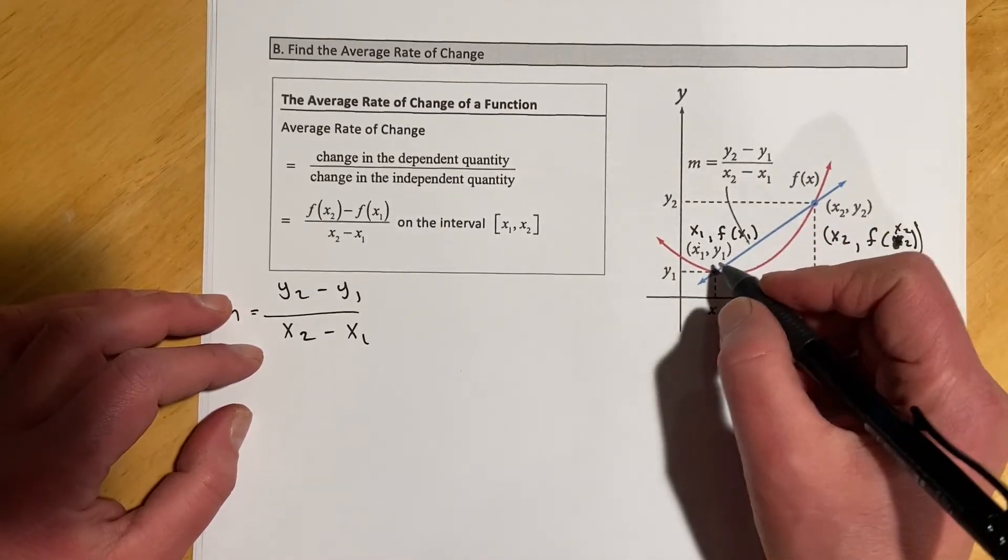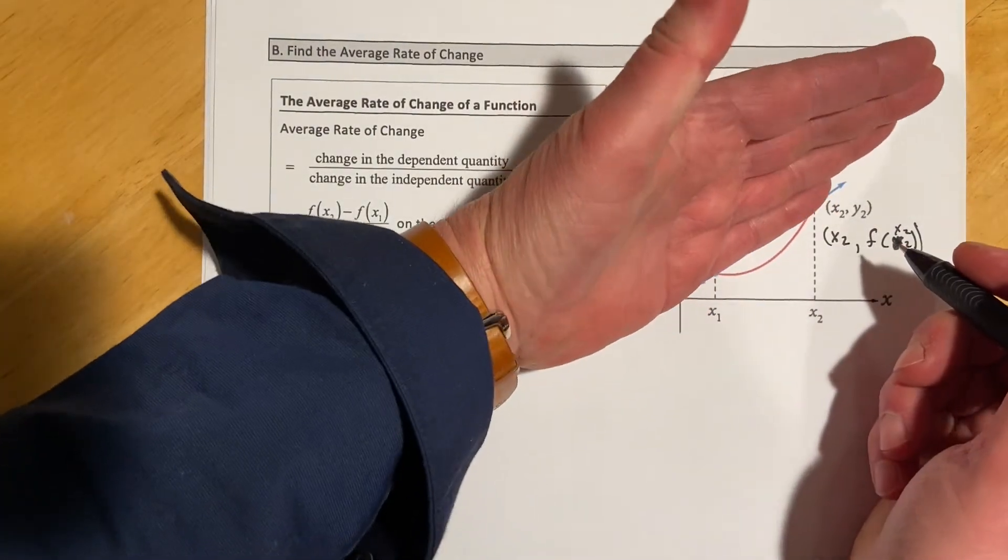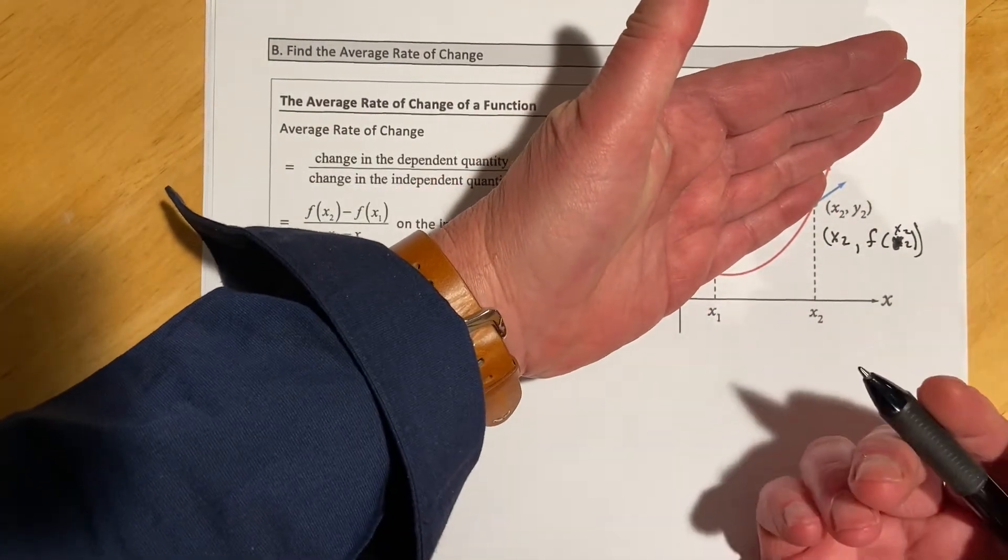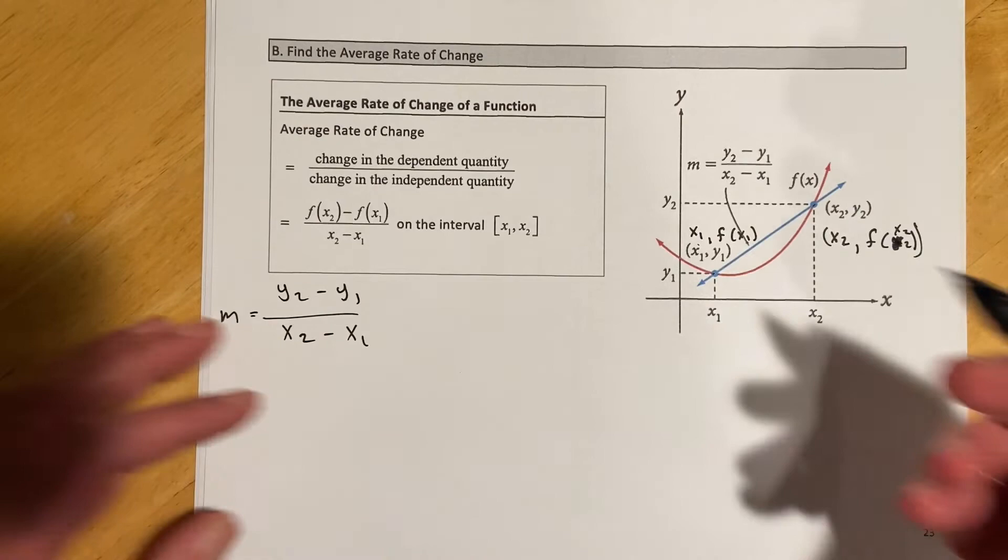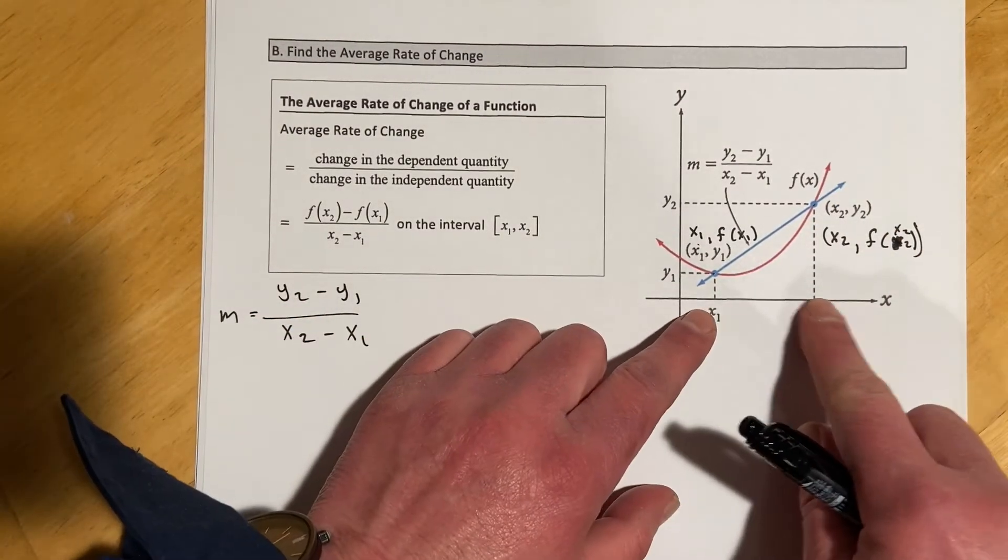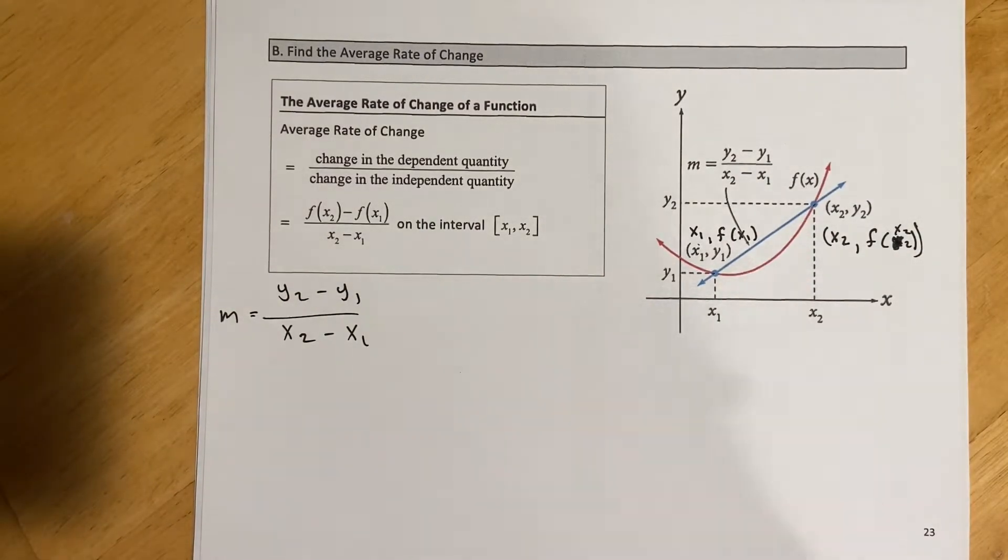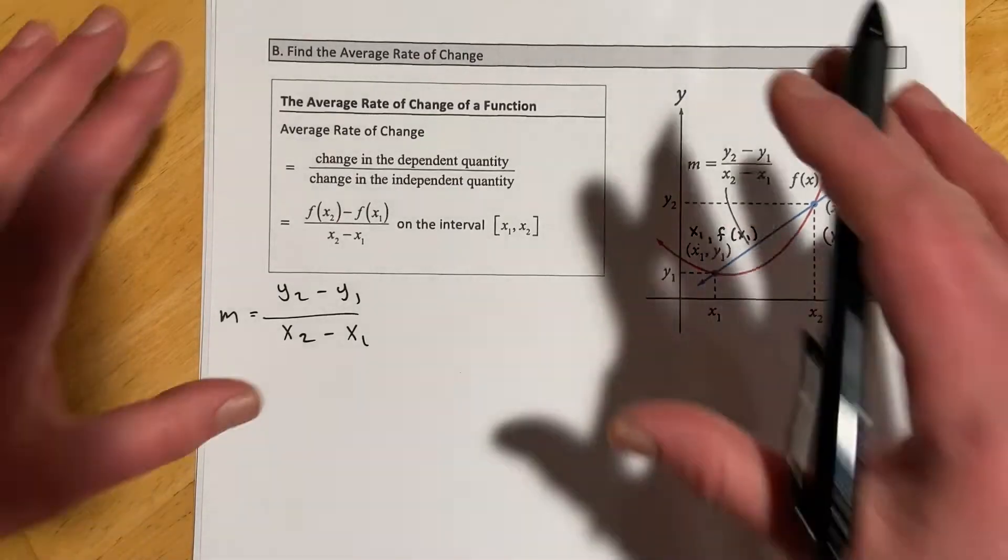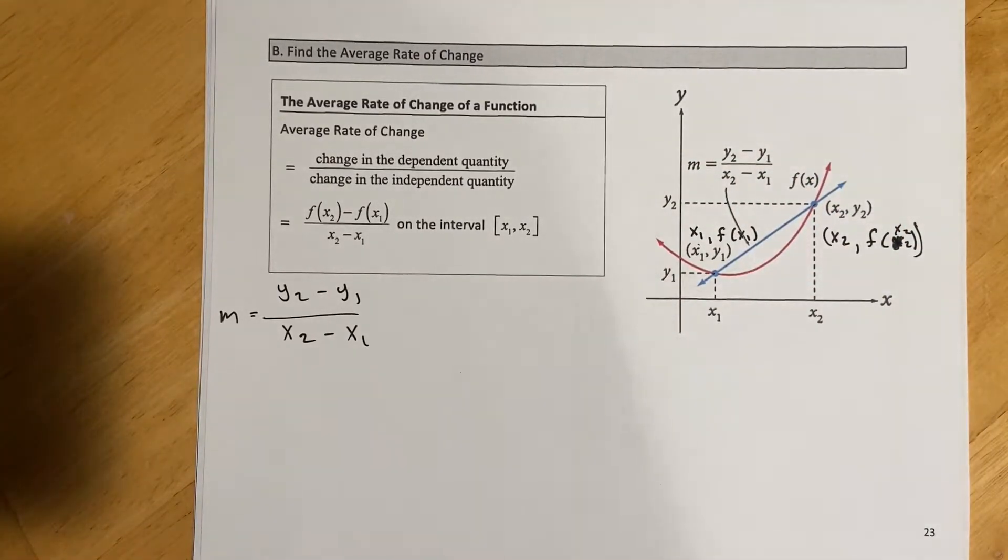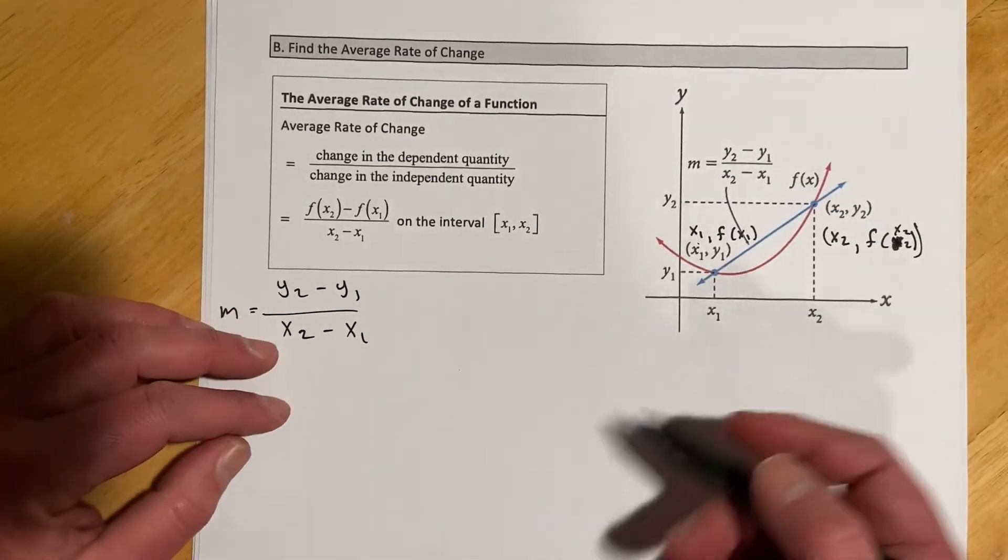What that is is called the secant line. So this blue line that it shows here between these two points is called the secant line of these points, and its slope is the equivalent of the average rate of change. That's going to be important because when we get to calculus, we're going to let these points get closer together and this is going to turn into a derivative and an instantaneous rate of change. So this average rate of change is kind of the last stop in algebra before heading into calculus.